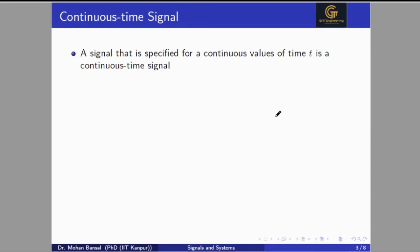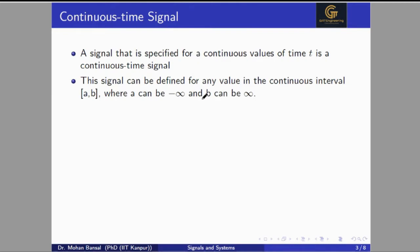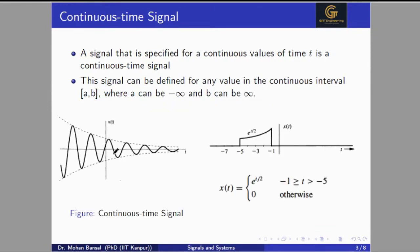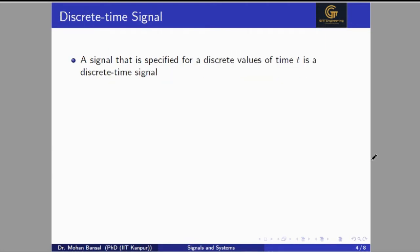A continuous time signal is a signal that is specified for a continuous value of time t. We can pick any time for a continuous time signal, and this signal can be defined over the entire interval ranging from a to b, where a can be minus infinity and b can be infinity. Here we can see the decaying exponential signal and the decaying exponential sinusoidal signal — the signal is continuously varying. On the right hand side, the signal is defined between minus 5 and minus 1 and is continuous within that range; its value is 0 outside that range.